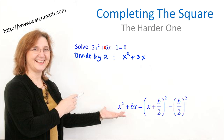So, 2 divided by 2 is 1, 6 divided by 2 is 3, and negative 1 divided by 2 is negative 1 half, equals 0. We have successfully transformed this equation into an equivalent one where the coefficient of x squared is equal to 1. Therefore, we can apply the completing the square identity.